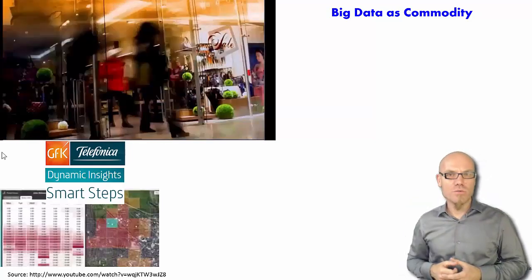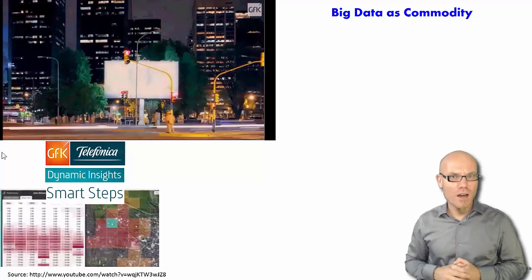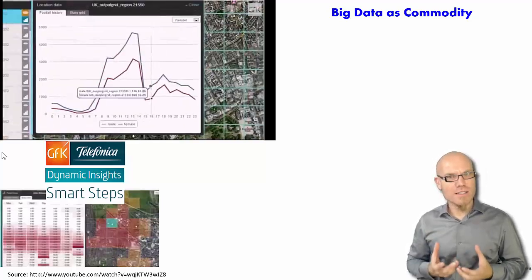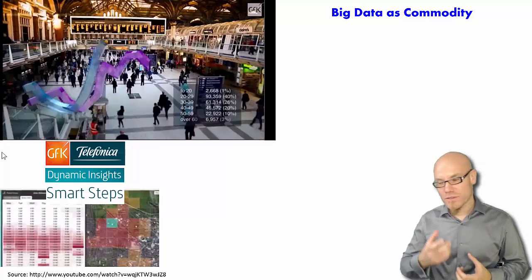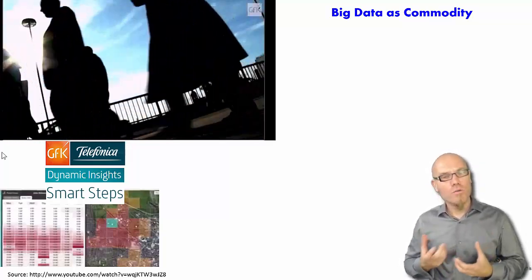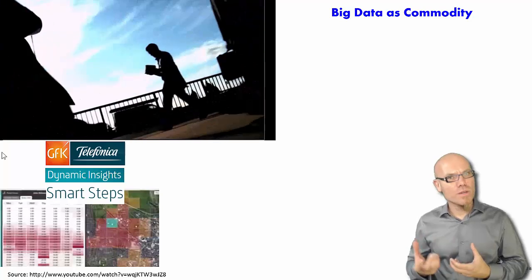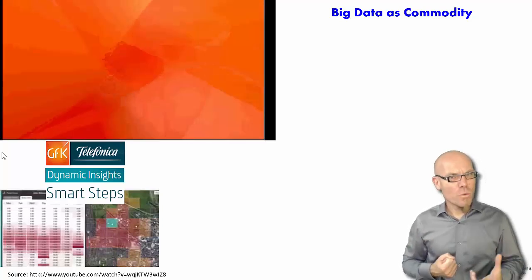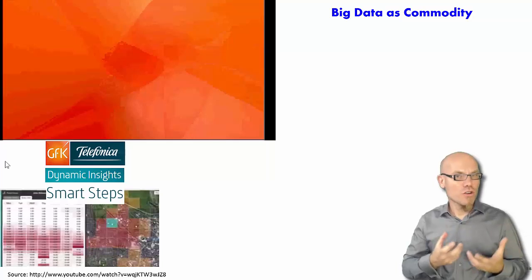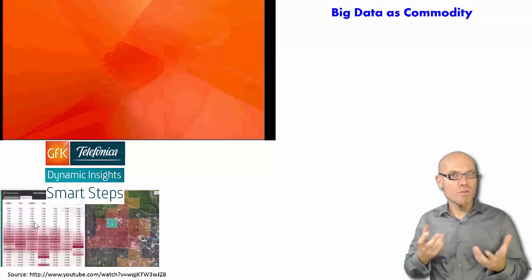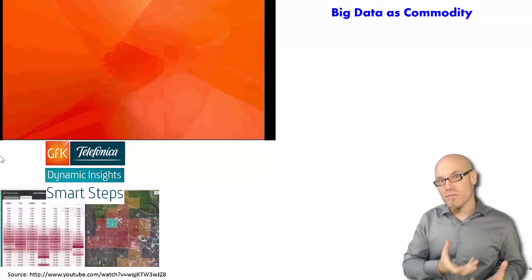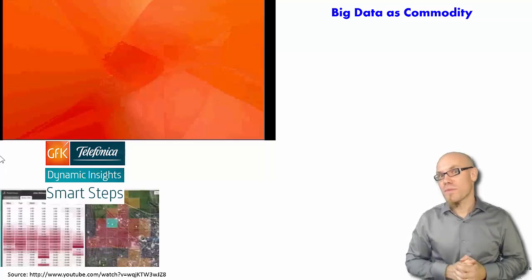So if you're an entrepreneur and you want to set up a new store in town, you can go there and study these patterns. You can see which kind of people, with which gender and what kind of income, walk around in which time of the day and where, and you can optimize the location of your specific store — whether it be men's clothes, women's clothes, or whatever.